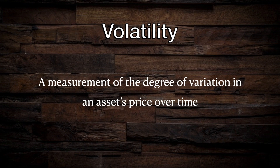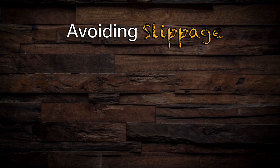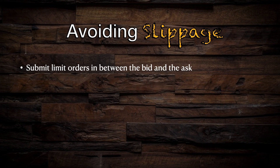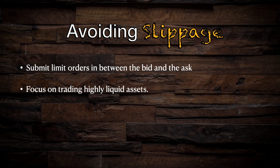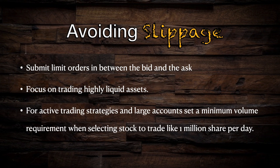To avoid losing money to slippage, you can either submit limit orders somewhere in between the bid and the ask to try to secure a better price, or you can focus on trading equities with high levels of liquidity and tight bid-ask spreads. As a general rule of thumb, you should avoid actively trading any stocks that trade less than 1 million shares per day. If you are trading with large quantities of money, you may want to set your volume threshold even higher to seek markets with the maximum liquidity.